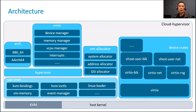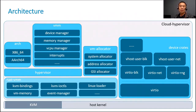Here is the diagram showing the major components of the Cloud Hypervisor stack. Let me introduce them from bottom up and left to right. On top of the host Linux kernel is RustVMM, and on top of that is Cloud Hypervisor.